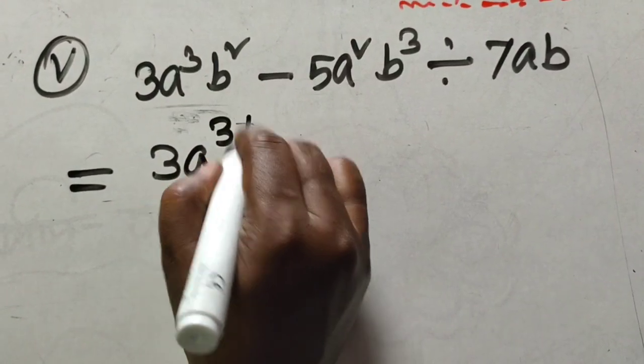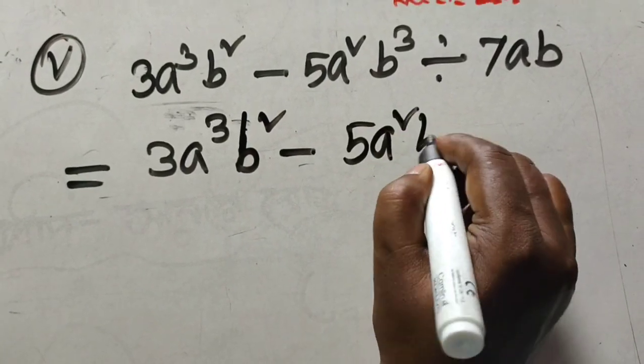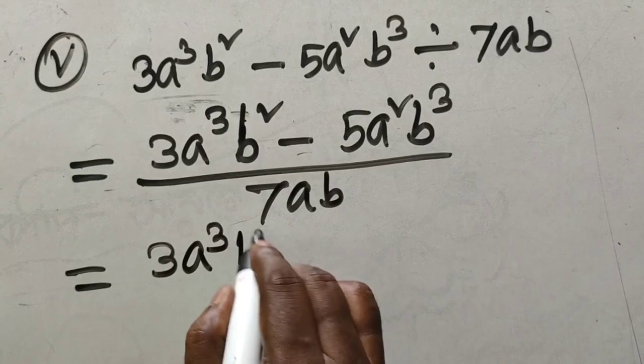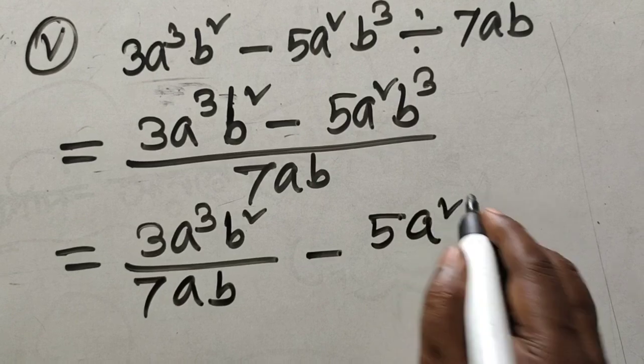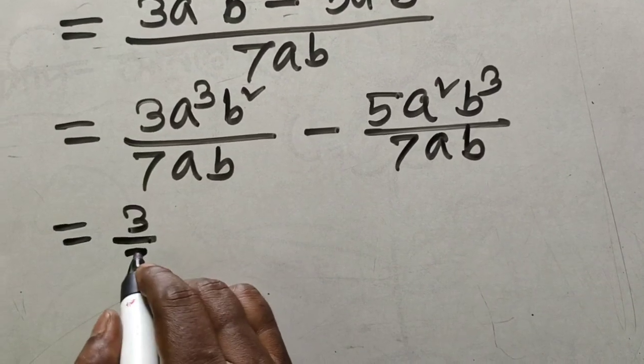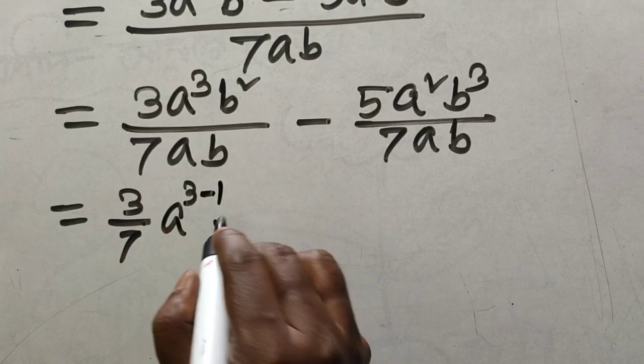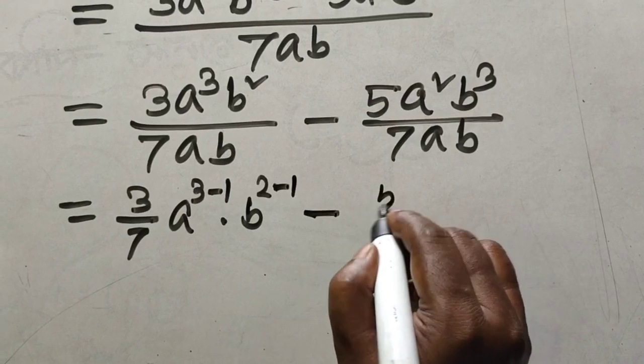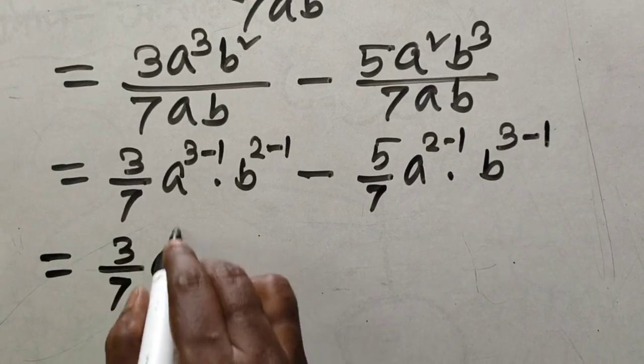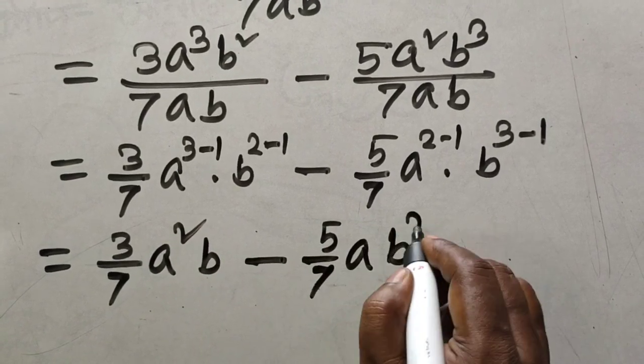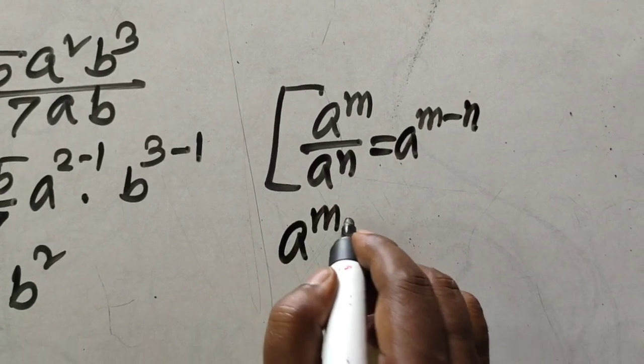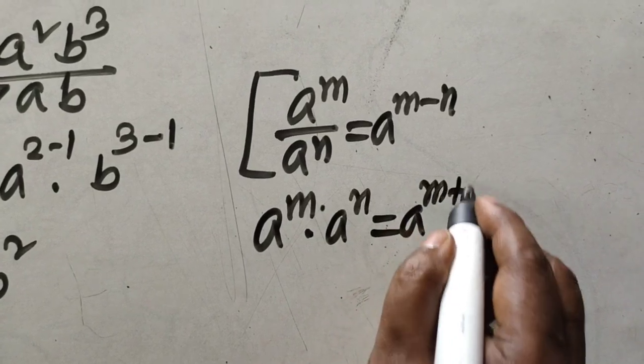Now for division: 3a³b² minus 5a²b³ divided by 7ab. We divide each term separately: 3a³b² divided by 7ab, and 5a²b³ divided by 7ab.